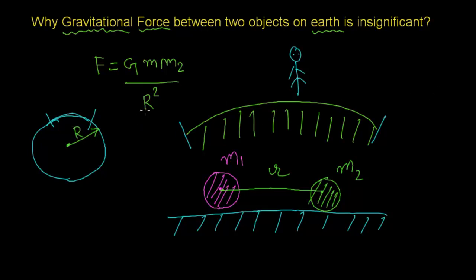Now this r basically represents the distance between two objects that are considered, the distance between two objects.